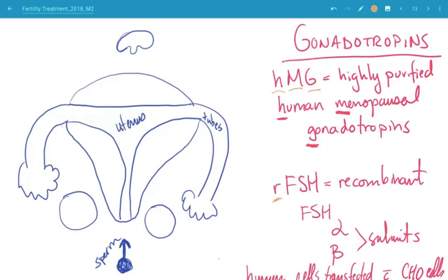All right, let's talk about gonadotropins now. Gonadotropins are essentially exogenous sources of FSH and LH.